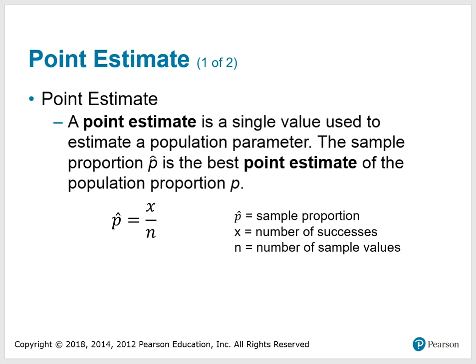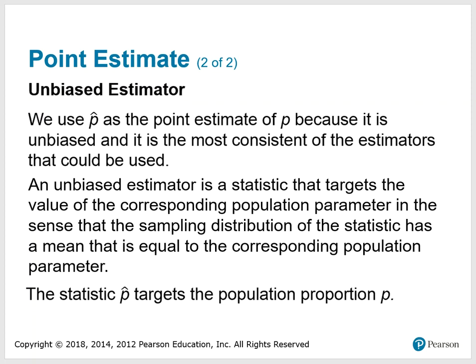A point estimate is a single value used to estimate a population parameter. The sample proportion P-hat is the best point estimate of the population proportion P, and is found by taking X divided by N. We use P-hat as the point estimate of P because it is unbiased and most consistent. An unbiased estimator is a statistic that targets the value of the corresponding population parameter, meaning the sampling distribution has a mean equal to the population parameter. The statistic P-hat targets the population proportion P.